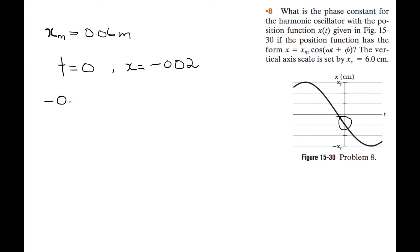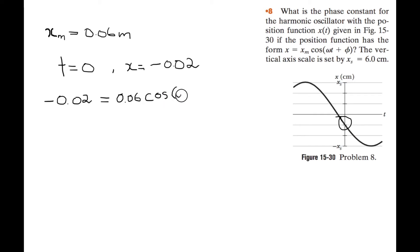So if we substitute these back into the given formula, we have negative 0.02 equals the amplitude 0.06 times the cosine of omega — which is still unknown — but the time is 0, so that whole term goes to 0, plus phi.